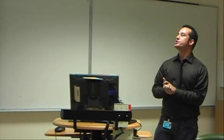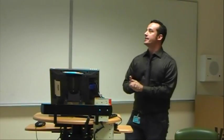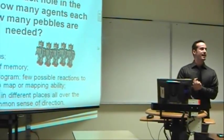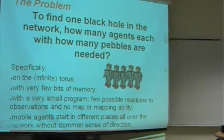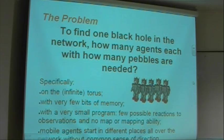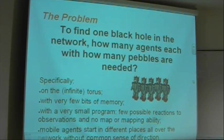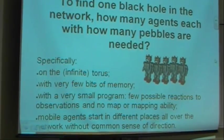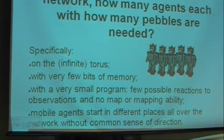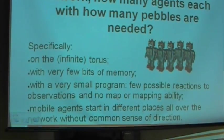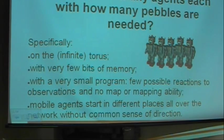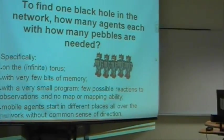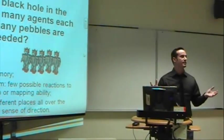So what is the problem exactly? What we wish to do is we wish to find one black hole in the network. And the question is how many agents each carrying how many pebbles? That's the idea. We want to minimize the number of agents and the number of pebbles such that we can find this black hole. Now, specifically, we're going to use the torus for this problem. We wish to have very little memory, a very few bits of memory, a very small program. We wish to use a very finite state machine. So just a few decisions are going to be necessary to make this work. And the mobile agents, they're going to start all over the network. We can't assume they ever meet because that's the nature of things.